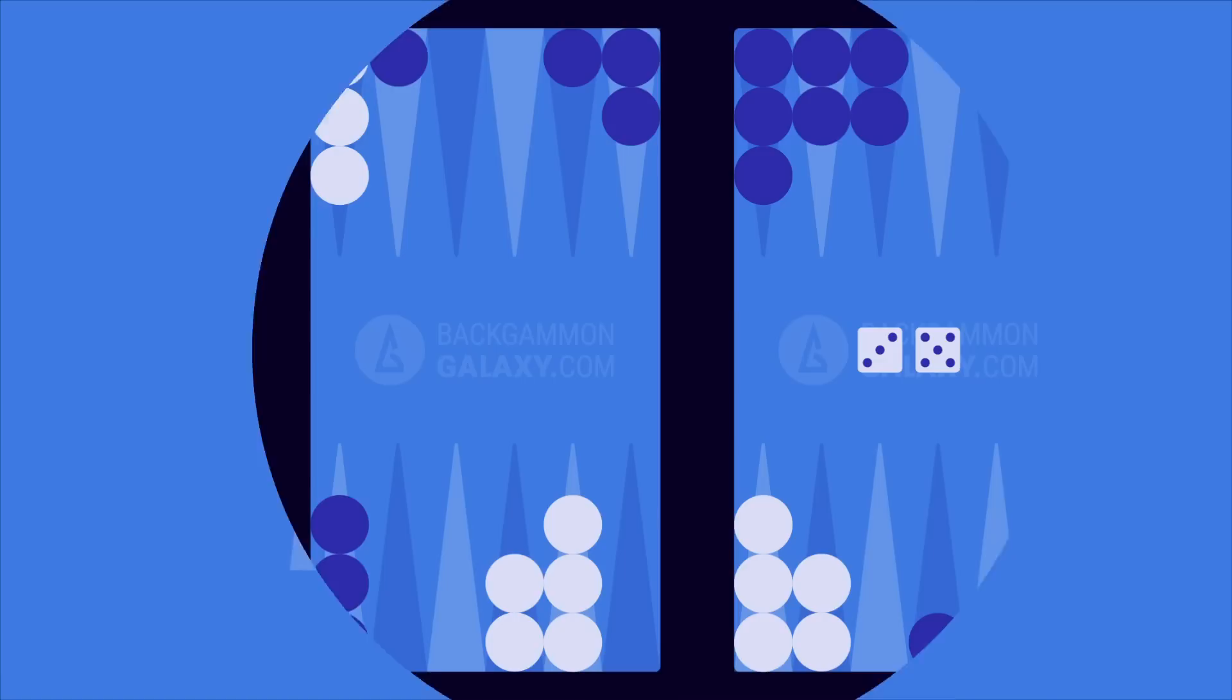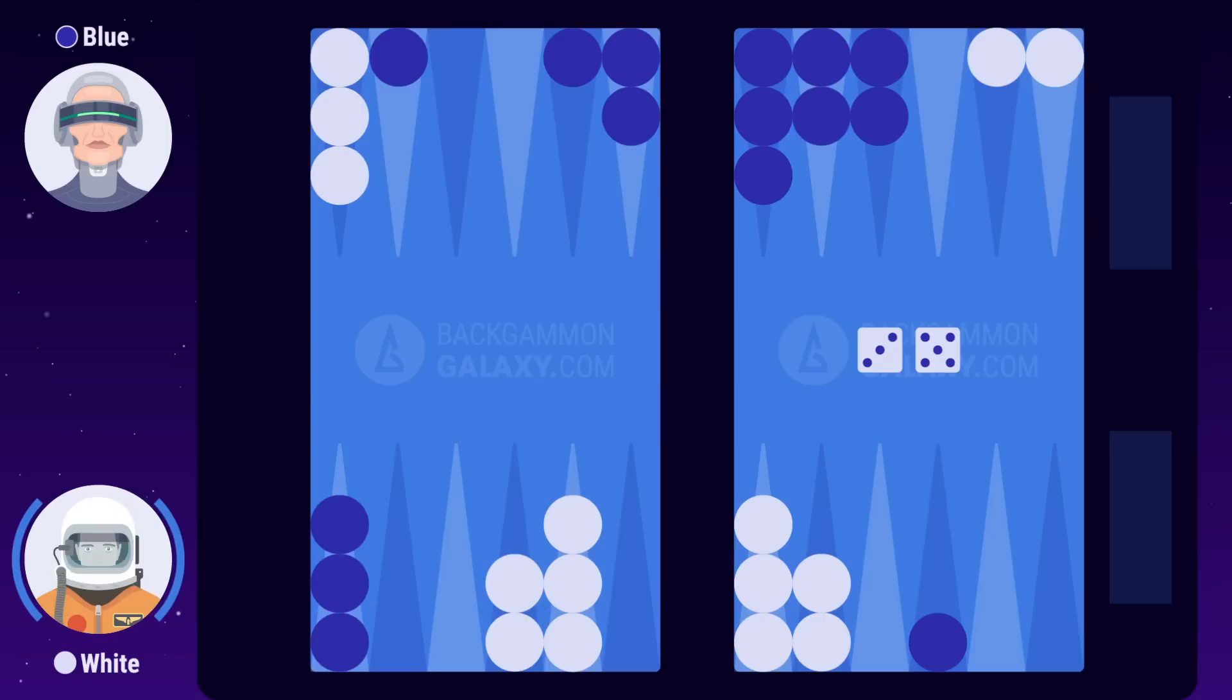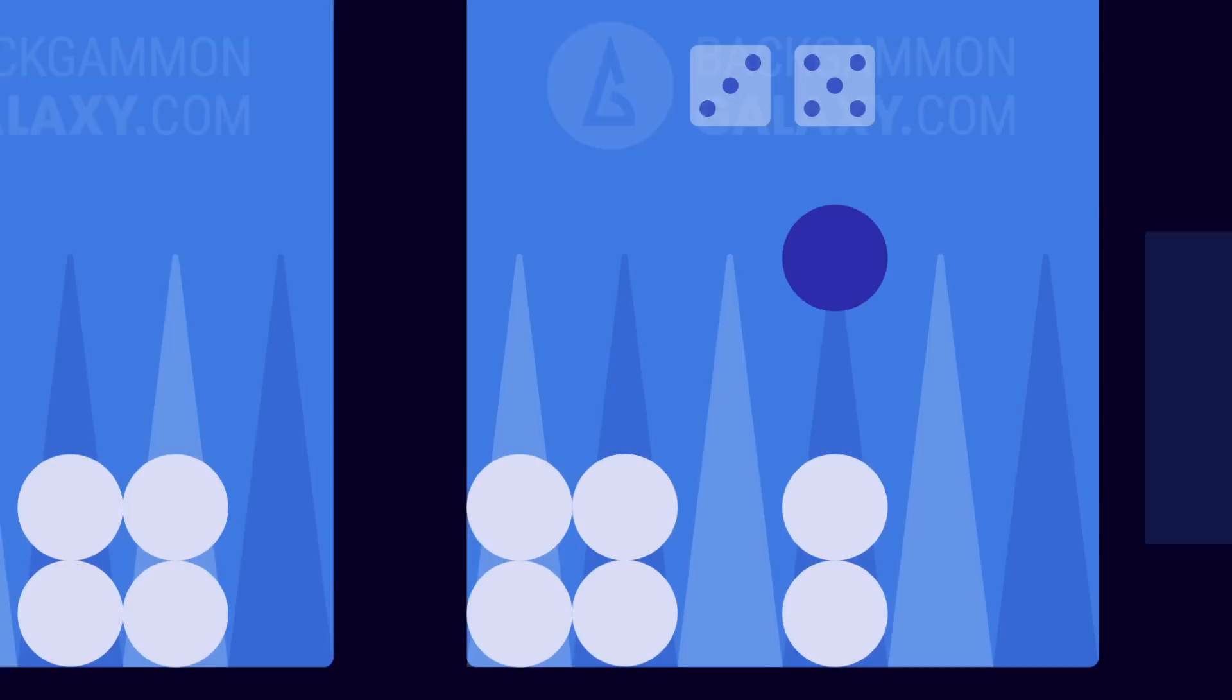Section 6. Hitting checkers. A single checker is called a blot. This checker can be hit if your opponent lands on it. In the current position, blue has one blot on white's three point and two blots in her outer board. In the previous section, white rolled 3-5. He decides to hit blue while at the same time making a valuable anchor in his home board. When a checker is hit, it must be placed on the bar. White confirms the move by clicking on the dice.